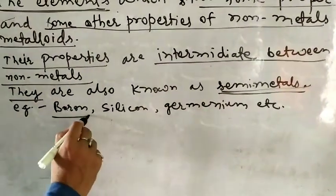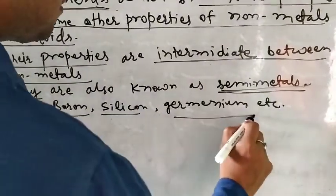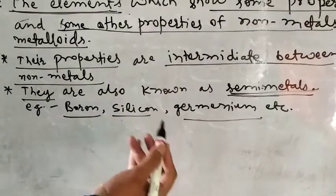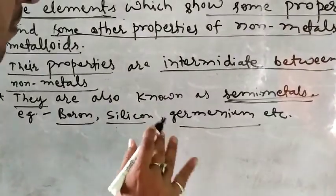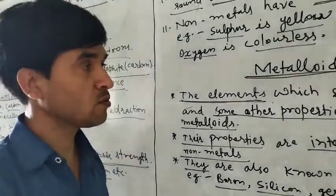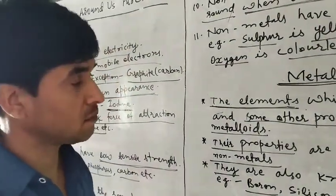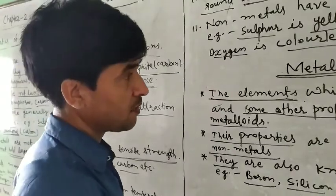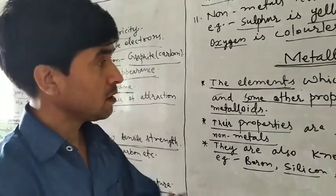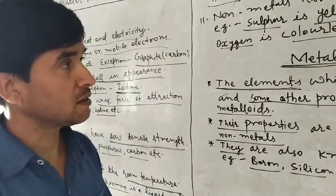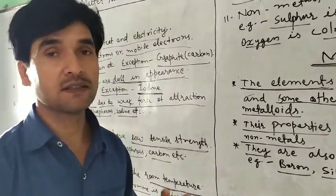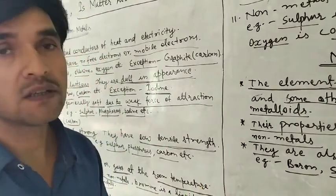For example, boron, silicon, germanium etc. are metalloids. They have both the properties of metals and non-metals — sometimes they behave like metals and sometimes like non-metals. We conclude this segment here, and in the next class we will take up the topic of mixtures. Thank you.